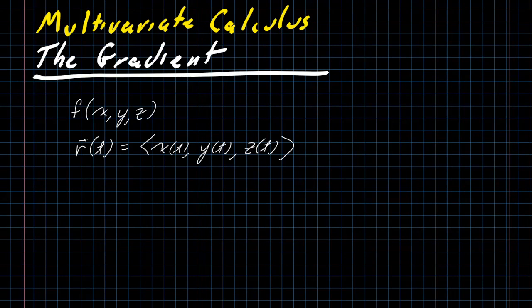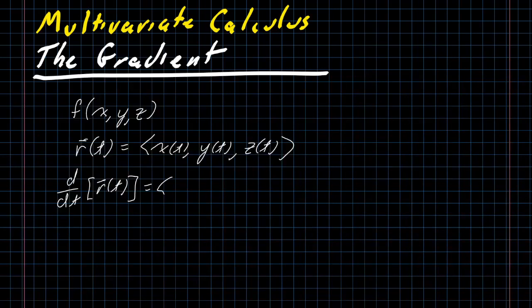We've learned previously that the derivative with respect to t of r of t is the vector with components x prime of t, y prime of t, and z prime of t.